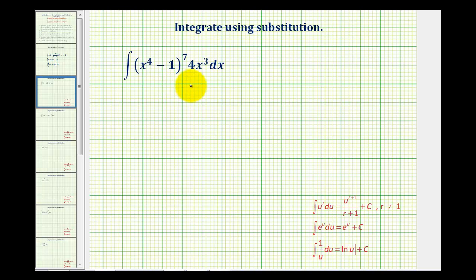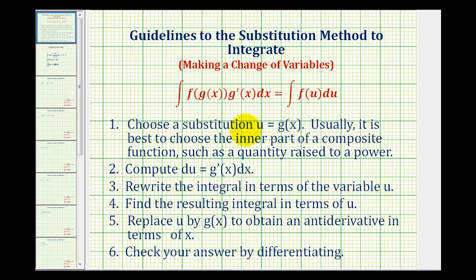So let's start with a quick review of how this technique works. We're going to start by choosing a substitution u equals g of x, where g of x is part of the original integral, and it's usually best to choose the inner part of a composite function, such as the quantity raised to a power.